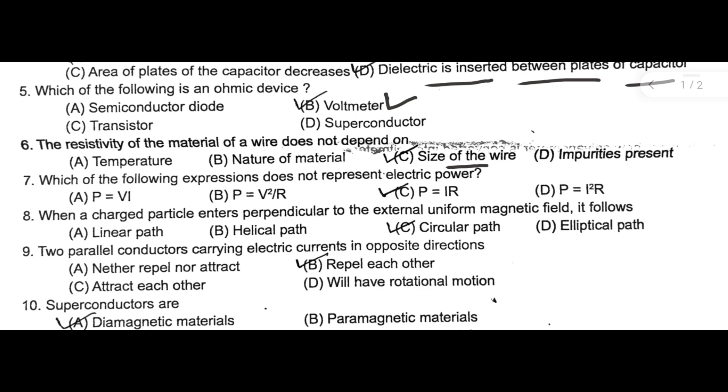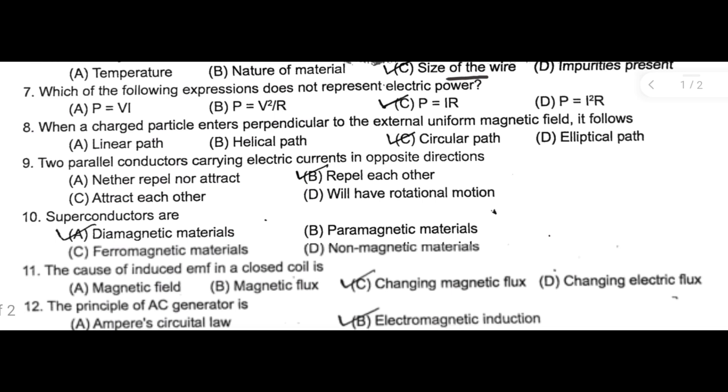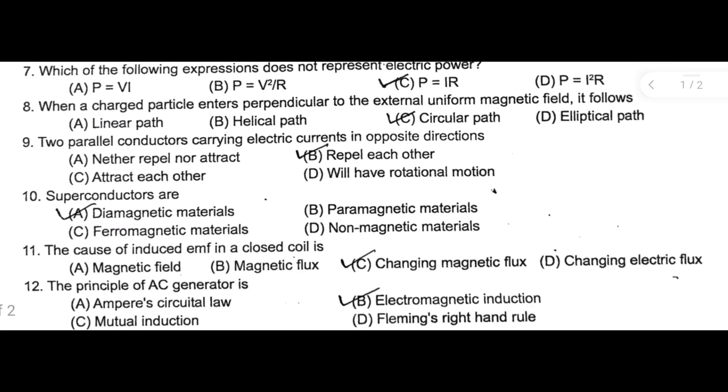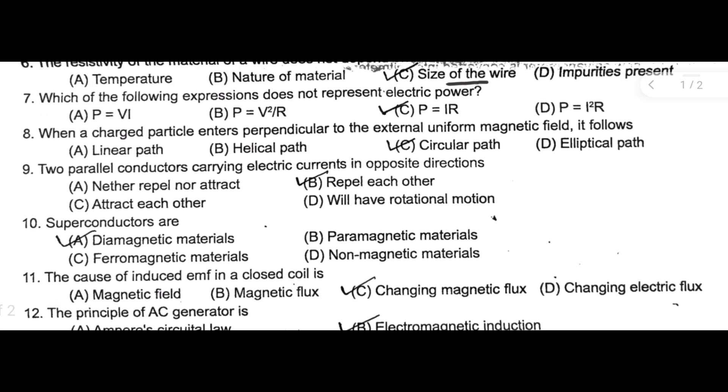Which of the following expressions does not represent electric power? That is option C, P equal to IR. Next one: when a charged particle enters perpendicular to the external uniform magnetic field, it follows circular path.